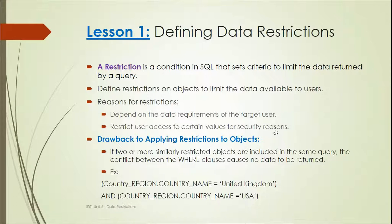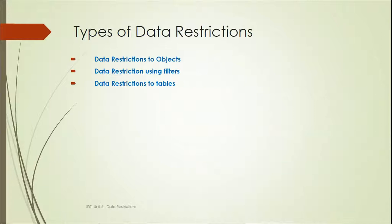only if both conditions are matching will the data be retrieved; for other countries it will not retrieve data. We need to resolve these issues while applying the conditions. The different types of data restrictions are: data restrictions to objects, data restrictions using filters, and data restrictions to tables. We can apply restrictions to particular objects, to tables, or by using filters.